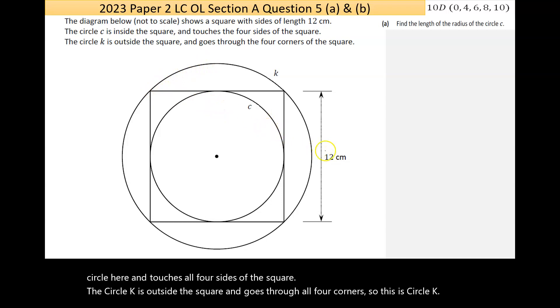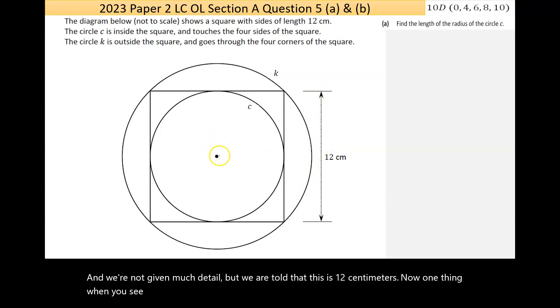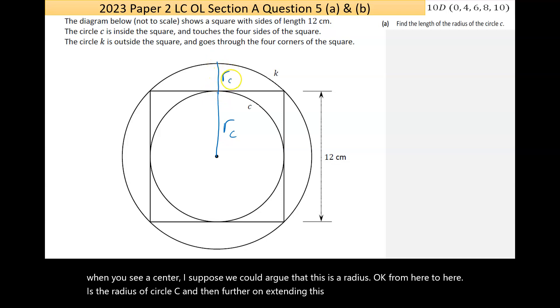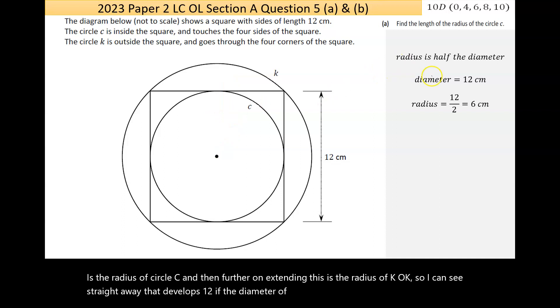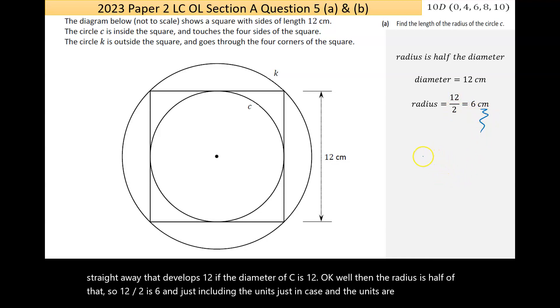Now we're not given much detail, but we are told that this is 12 centimeters. Now one thing when you see a center, I suppose we could argue that this is a radius from here to here is the radius of circle C, and then further on extending, this is the radius of K. So I can see straight away that this is 12. If the diameter of C is 12, well then the radius is half of that, so 12 divided by 2 is 6, and just including the units just in case, and the units are centimeters. So that's a fairly decent one, so we've got one part right without too much work.